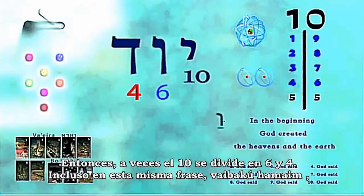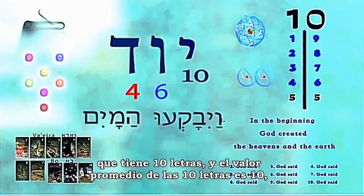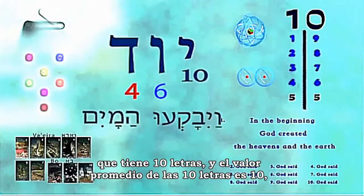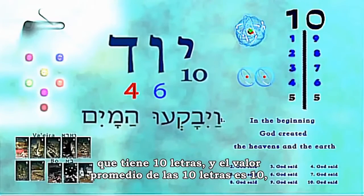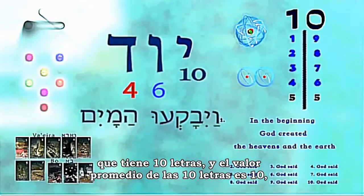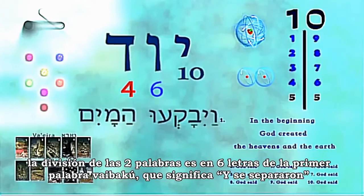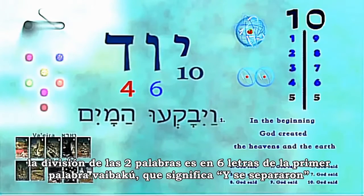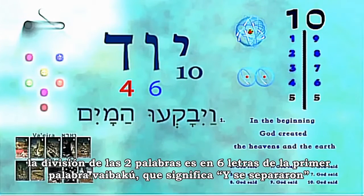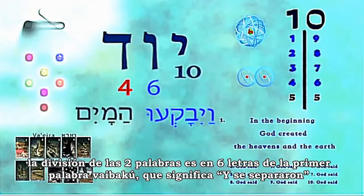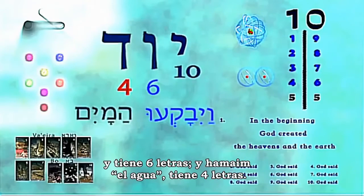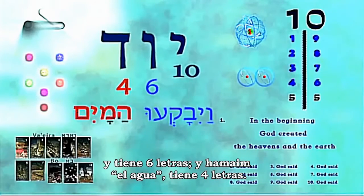Sometimes ten splits into six and four — and even in this very phrase itself, Vayibak'u HaMayim, it has ten letters, and the average value of the ten letters is ten. The splitting of the two words is into six letters — Vayibak'u, the first word, has six letters — and HaMayim, the water, has four letters.